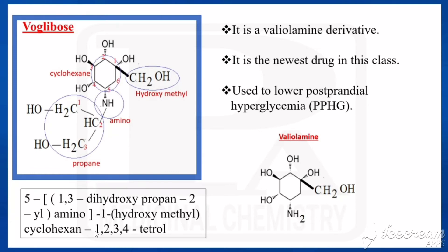The full name is: 5-(1,3-dihydroxypropan-2-yl)amino with a hydroxymethyl substituent — cyclohexene-1,2,3,4-tetraol. That is the complete structure of voglibose.